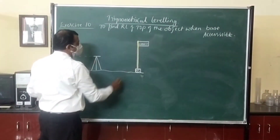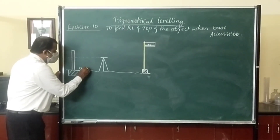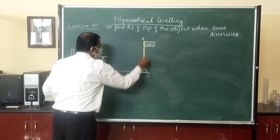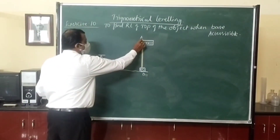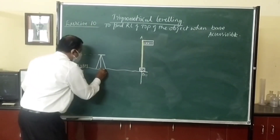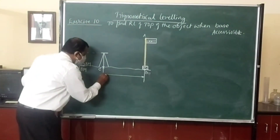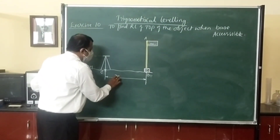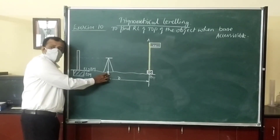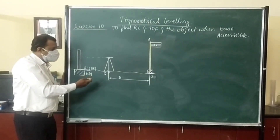We are finding the RL of the top of the object when the base is accessible. The RL of the benchmark is already known. Point A is the top of the object and B is the base. Set the theodolite at a convenient distance D from the base — this may be 10, 15, 20, or 30 meters — and select station C based on the topography of the ground.